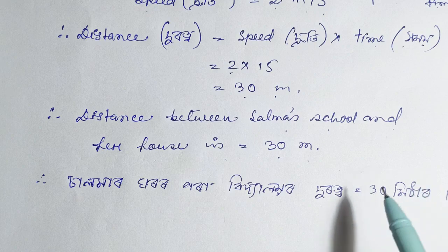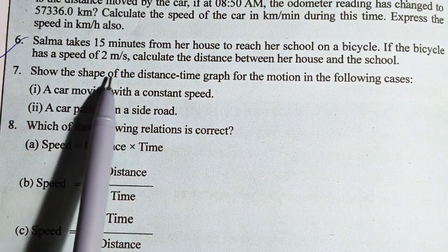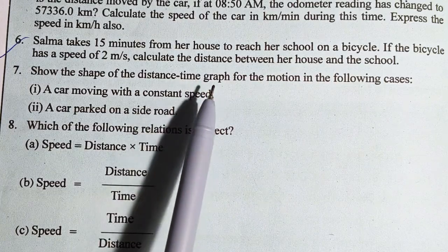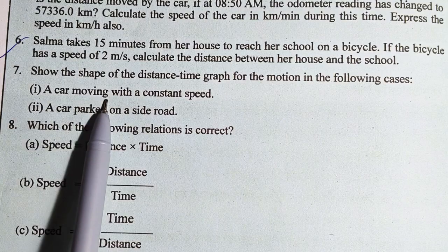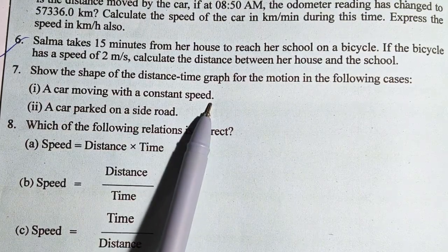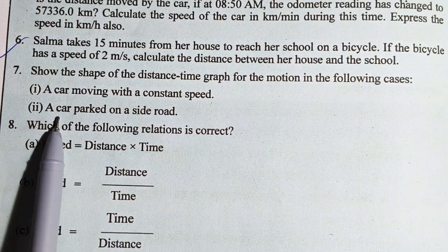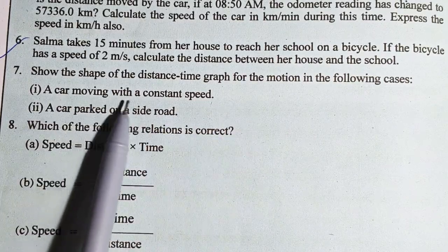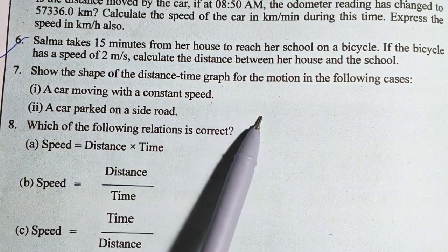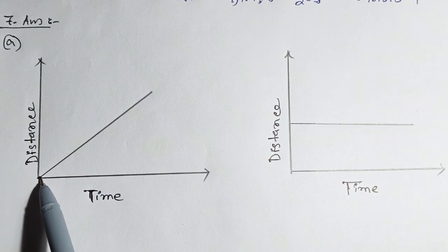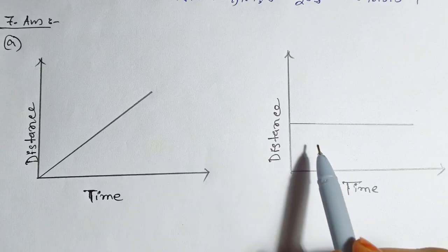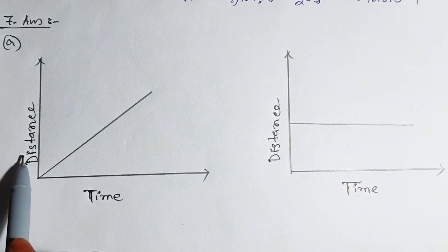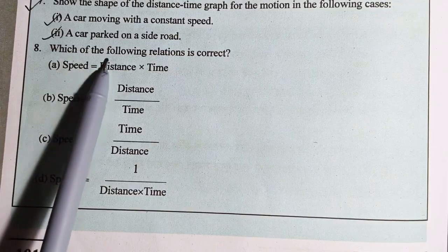Question number 7: show the shape of the distance-time graph for the motion in the following cases. Number 1: a car moving with constant speed. Number 2: a car parked on a side road. If you write time and distance, a parked car gives a horizontal line on the distance-time graph.